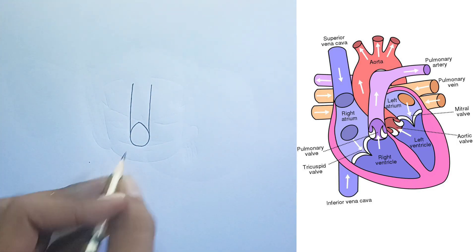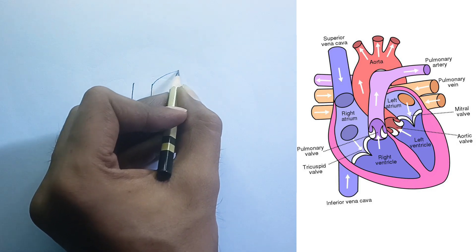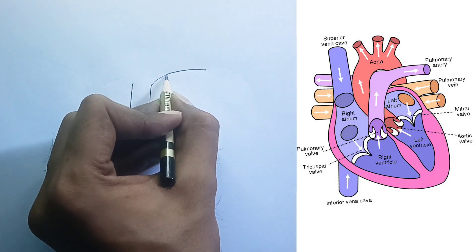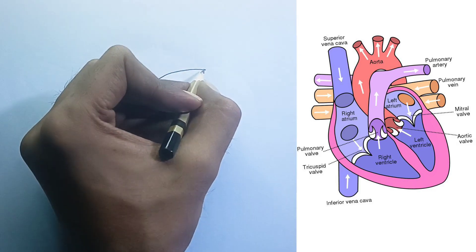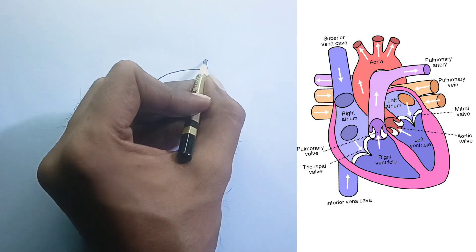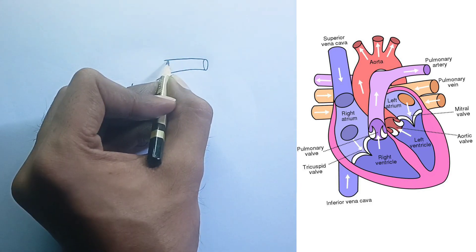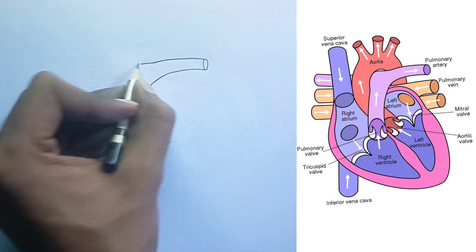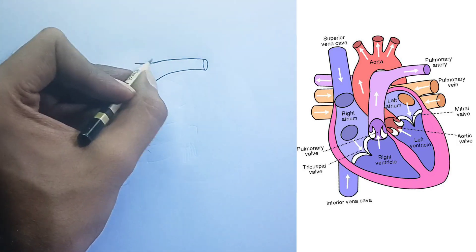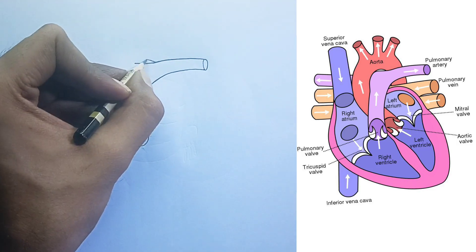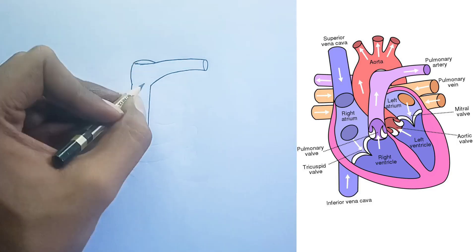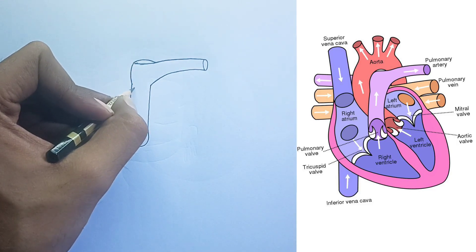Chambers of the heart. Right atrium: this is the upper right chamber. Deoxygenated blood from the body enters here via the superior vena cava from the upper body and inferior vena cava from the lower body. Right ventricle: this is the lower right chamber. It receives deoxygenated blood from the right atrium and pumps it to the lungs via the pulmonary artery.